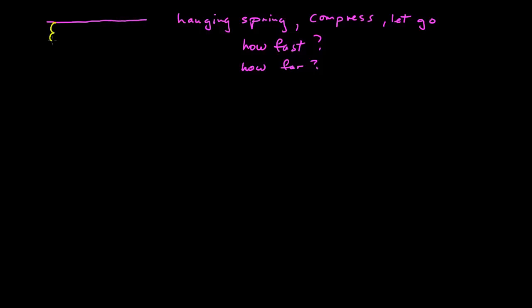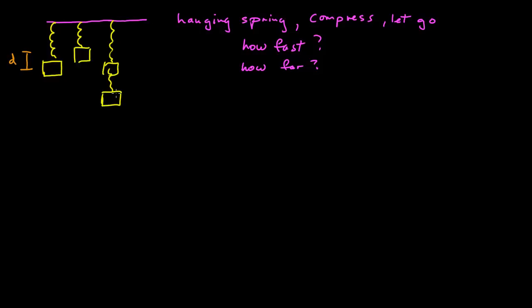We have this hanging spring vertically, and at some point there's an equilibrium where the spring exerts no force. We lift that up some amount d, let it go, and it zooms past equilibrium to some lower point where it comes to rest. We want to find how fast it's going when it comes back to the spring equilibrium, and then how far it falls.